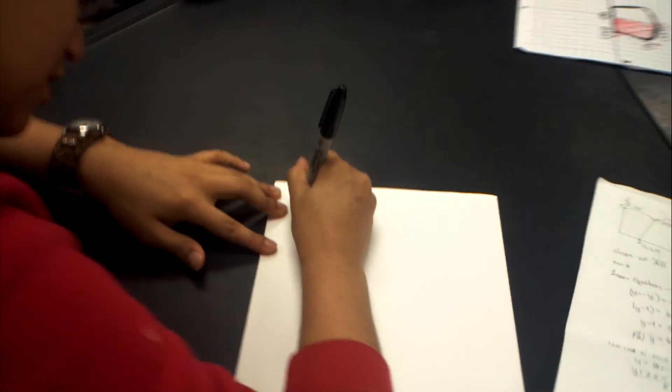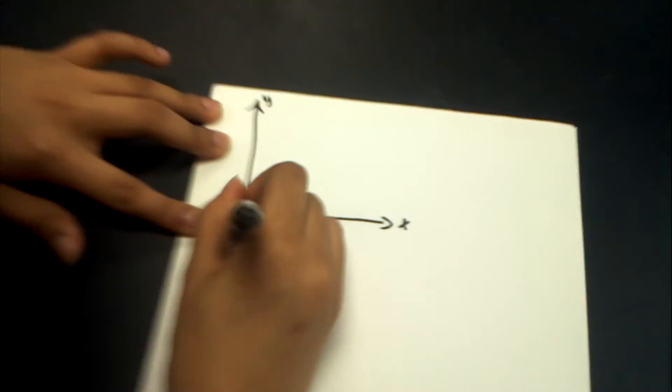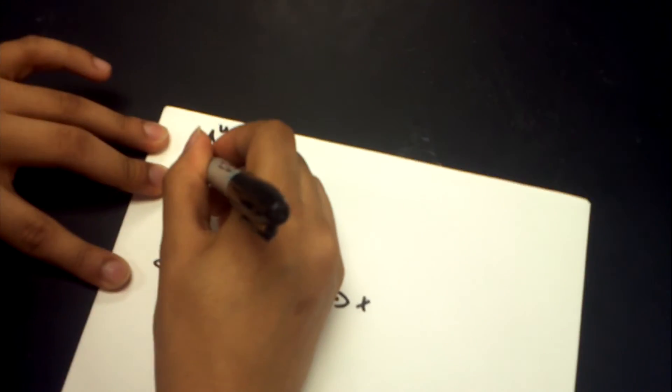Now we're going to find the equation of the line segment AB. I'm going to redraw it here. If you remember, there was one point.